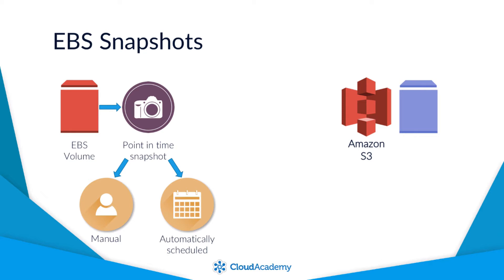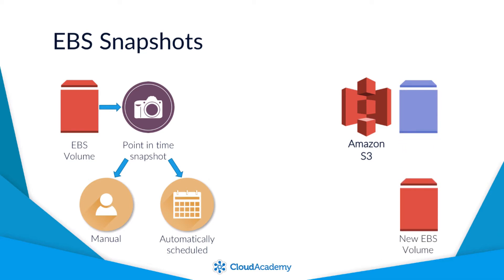Once you have a snapshot of an EBS volume, you can then create a new volume from that snapshot. So if for any reason you lost access to your EBS volume through some form of incident or disaster, you can recreate the data volume from an existing snapshot and then attach that volume to a new EC2 instance. To add additional flexibility and resilience, it is possible to copy a snapshot from one region to another.